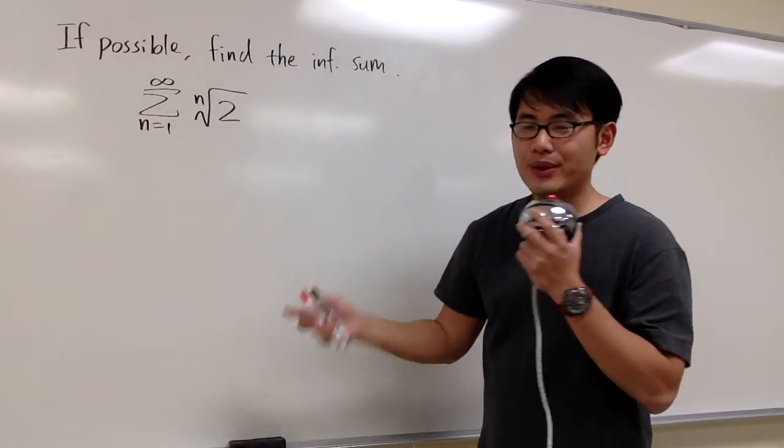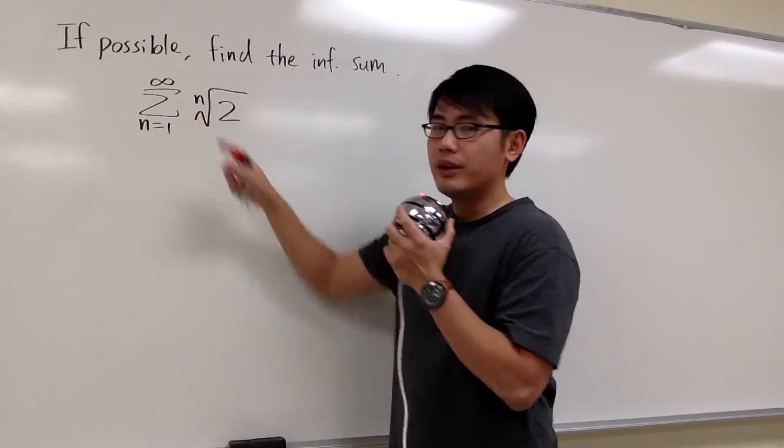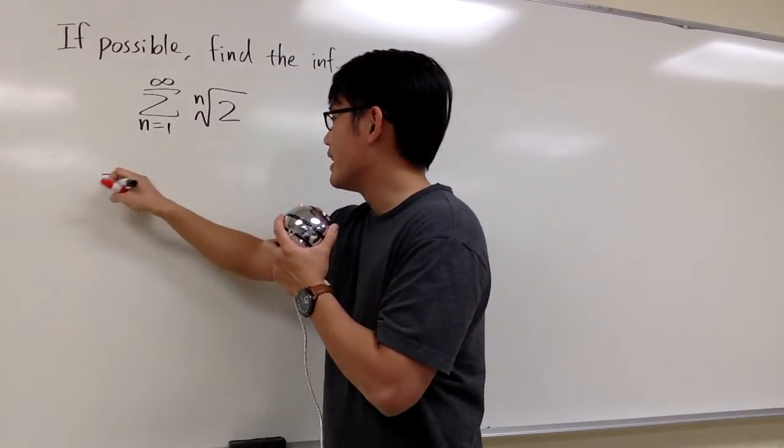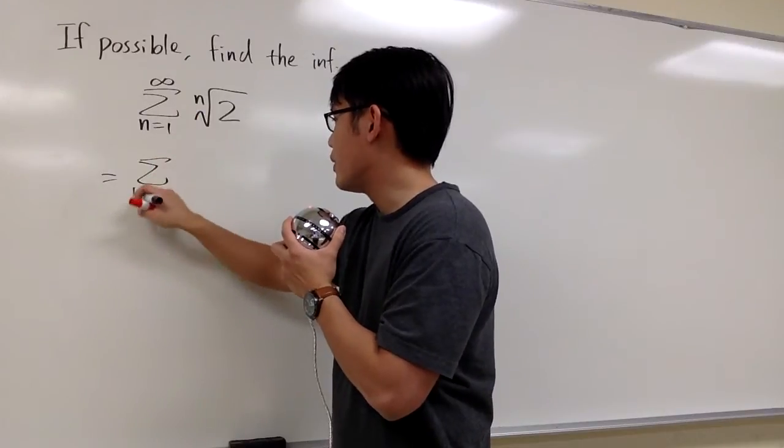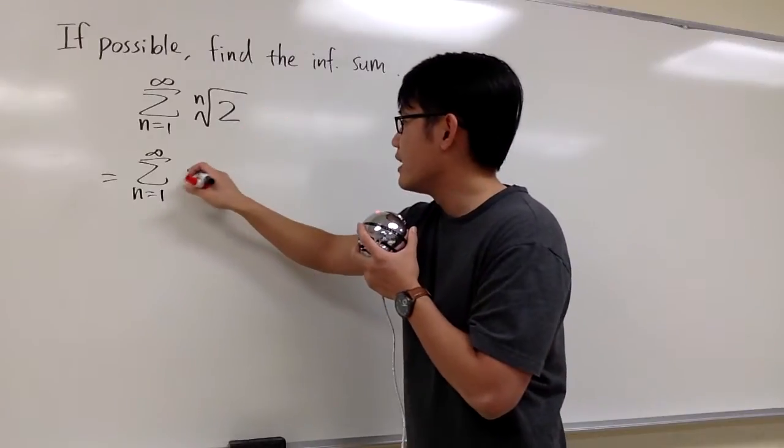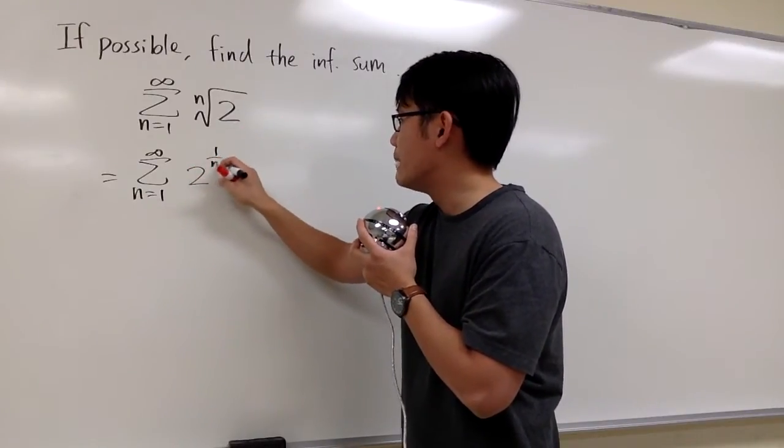What is the nth root of 2? We can look at the nth root of 2 in the power form, maybe that will help better. Let's go ahead and do that. This right here is the same as sigma when n goes from 1 to infinity, and then for the nth root of 2, it's equivalent to say 2 raised to the 1 over n power.